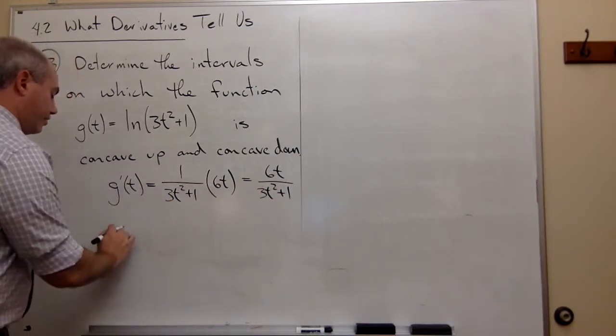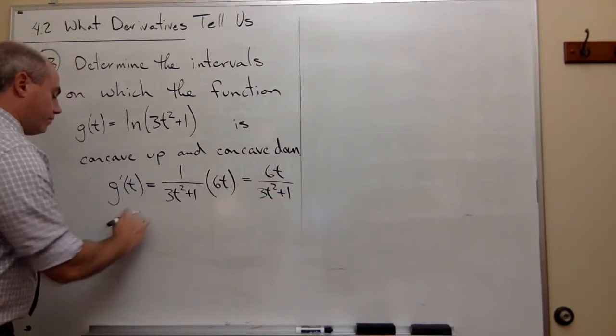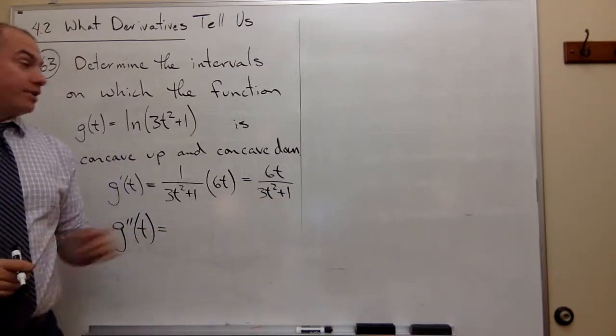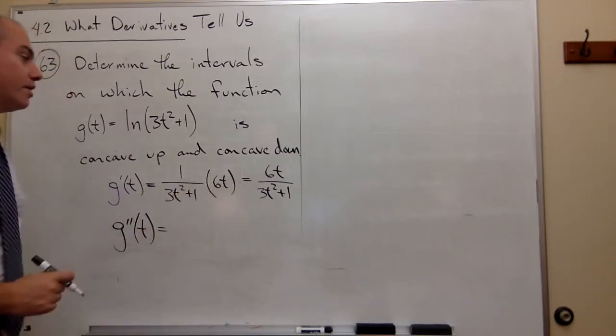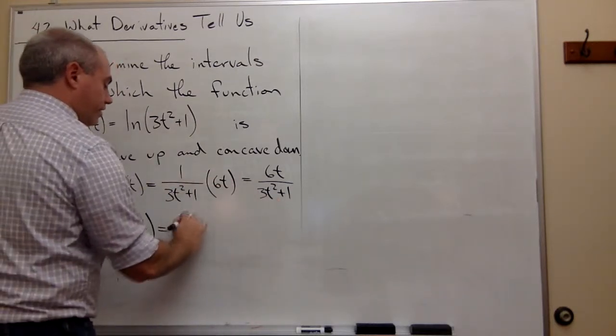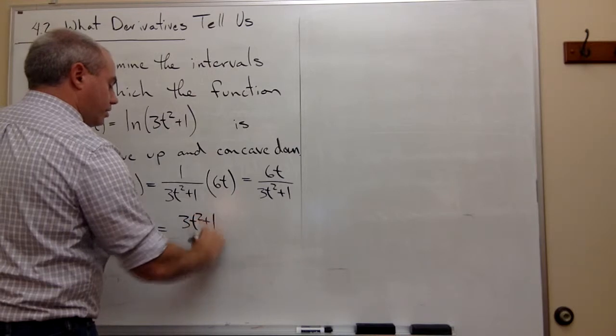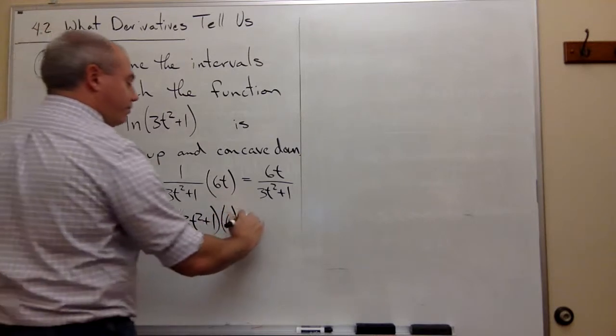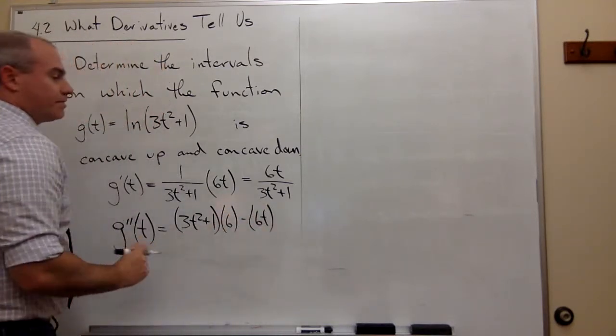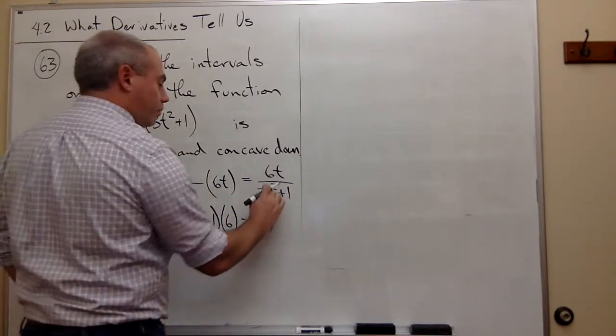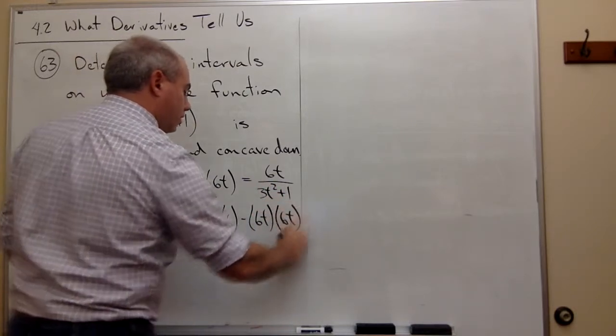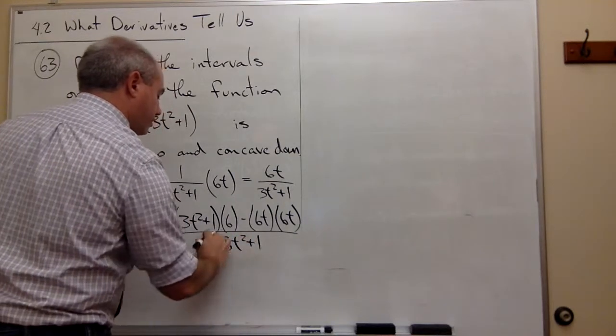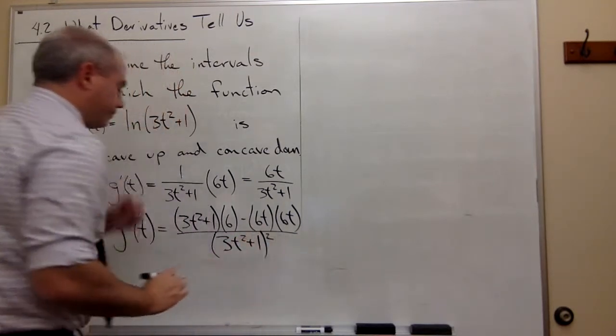Notice that if I want to take a second derivative and get g''(t), then I'm going to have to use the quotient rule because this is the quotient of two things. So, I've got the bottom, 3t² + 1, times the derivative of the top, which is 6, minus the top, 6t, times the derivative of the bottom, which is 6t, over the bottom, 3t² + 1, quantity squared.